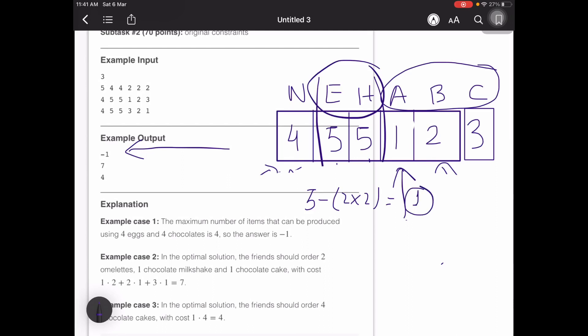Next what we can order is 1 chocolate milkshake because that would take 1 egg, the remaining egg, and 1 chocolate bar. So my chocolate bars now remaining is 4 and I have 0 eggs remaining. I have 4 chocolate bars remaining and I have already ordered 3 items.